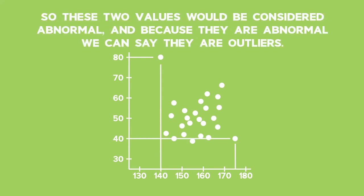So these two values would be considered abnormal, and because they are abnormal, we can say they are outliers.